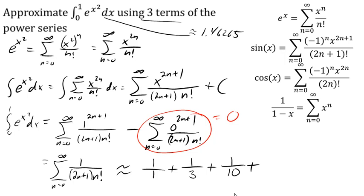So when n equals 3, we'd have 1 over 7 times 3 factorial, which is 6, so we'd have 1 over 42. And if we add that on, we get 1.4571,